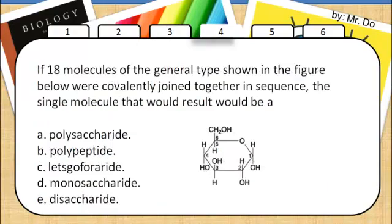4. If 18 molecules of the general type shown below were covalently joined together in a sequence, the single molecule that would result would be a polysaccharide.